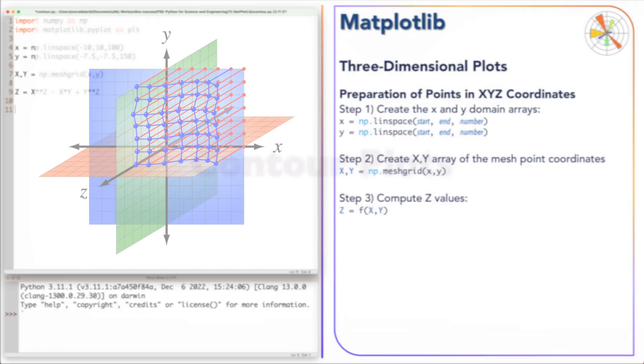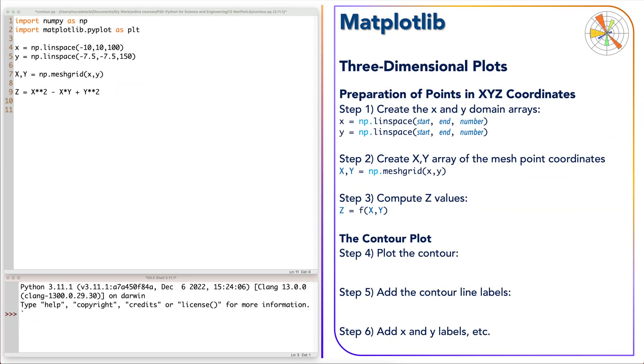Although contour plots look two-dimensional, they are in reality three-dimensional plots regarding the data used to plot them, as you will see in the next lesson. Plotting three-dimensional plots follows the same basic steps of plotting a contour plot. So the next step is to plot the contour by using contour function from the module pyplot. The contour plot needs two arguments: the Z values and the number of contour levels.